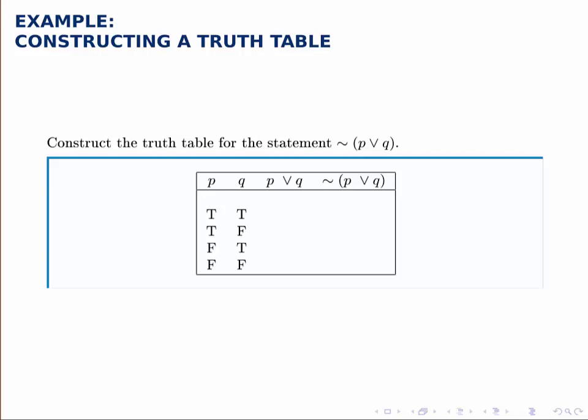Construct the truth table for the statement not P or Q. Notice the parentheses carefully. The parentheses give us the order of operations, so first we're going to take P or Q and then we'll negate that.